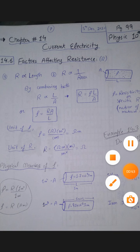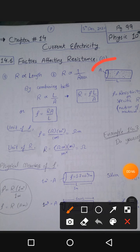We have taken a conductor, marked its length and cross-sectional area, and placed a sign of resistance inside it, which we had mentioned earlier. It has been stated here that resistance depends on the length of any conductor — the greater the length, the more resistance that conductor will provide. Another observation is that resistance is inversely proportional to the cross-sectional area of the conductor.